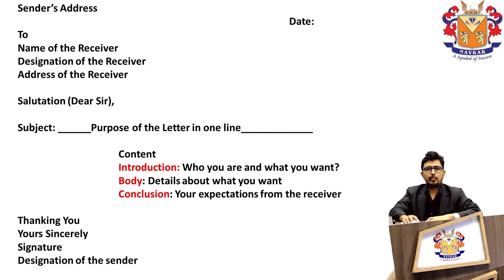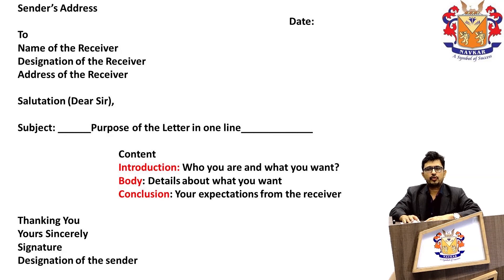On the top left, we start the letter with the sender's address. In a line below to the right, we mention the date. Then again to the left below the date, we write the name of the receiver, followed by his designation and his address.